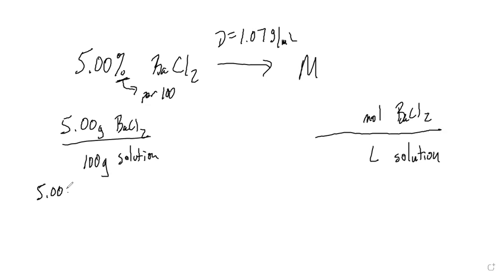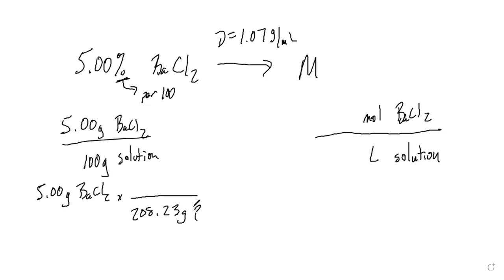I have 5 grams of barium chloride. The molar mass: barium is 137.33, plus two chlorines at 35.45 each, for a total of 208.23 grams per mole. So 5 divided by 208.23 gives, to three significant figures, 0.0240 moles of barium chloride.